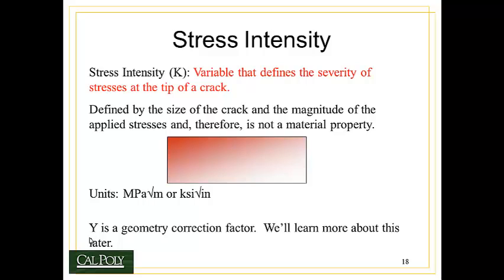Okay, so now we know that a material has a property called the fracture toughness. But we have a bigger problem, and that's understanding when will a crack actually move based on how bad that crack is. In other words, how do we define how bad a crack really is? To do that, we come up with a concept called stress intensity, or K. This is a variable that defines the severity of the stresses at the tip of a crack. It's the stresses at the tip of the crack that will actually propagate the crack forward. It's defined by the size of the crack and the magnitude of the applied stresses, and is therefore not a material property.